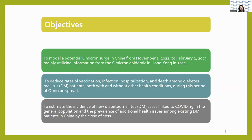Due to the timing of the student paper challenge, we developed this model before 2024. Our goal was to predict a possible increase in Omicron variant cases from November 2022 to February 2023, particularly among people with type 2 diabetes.